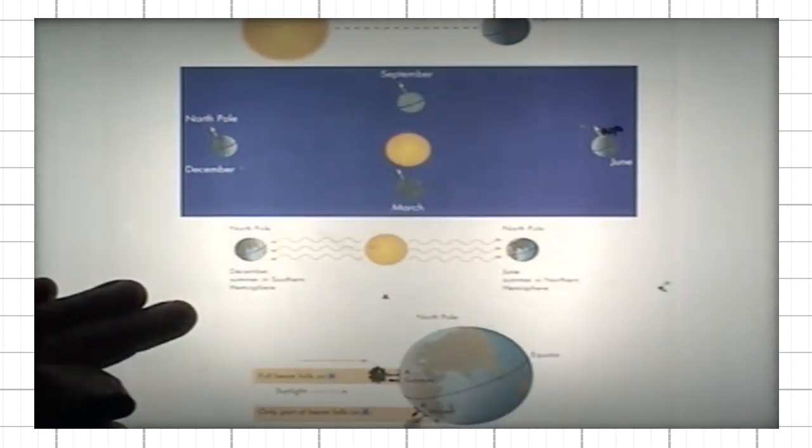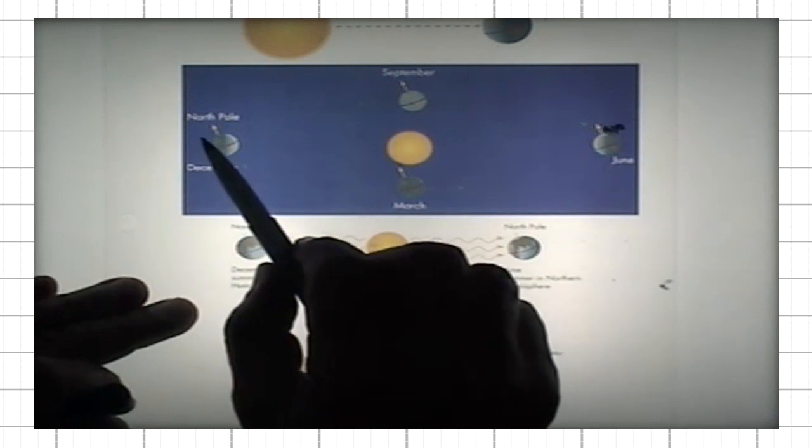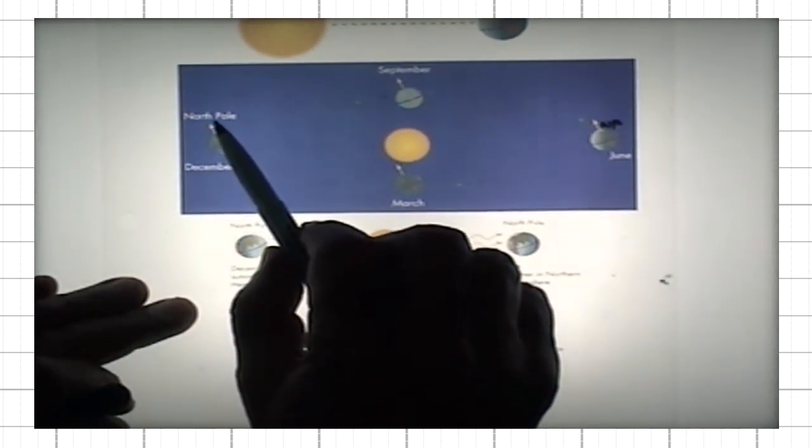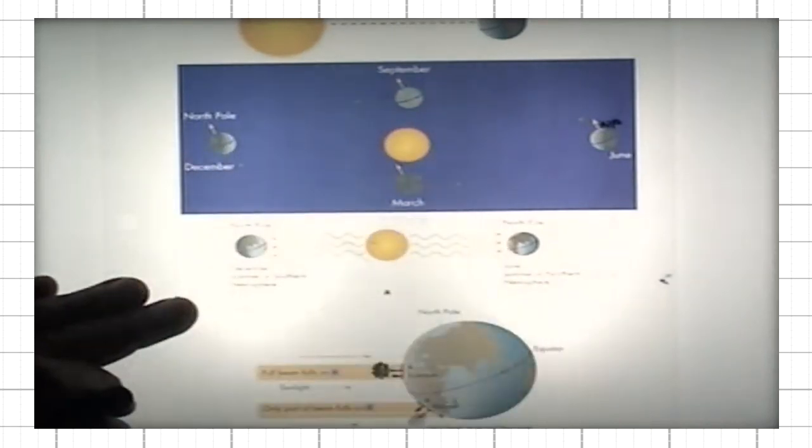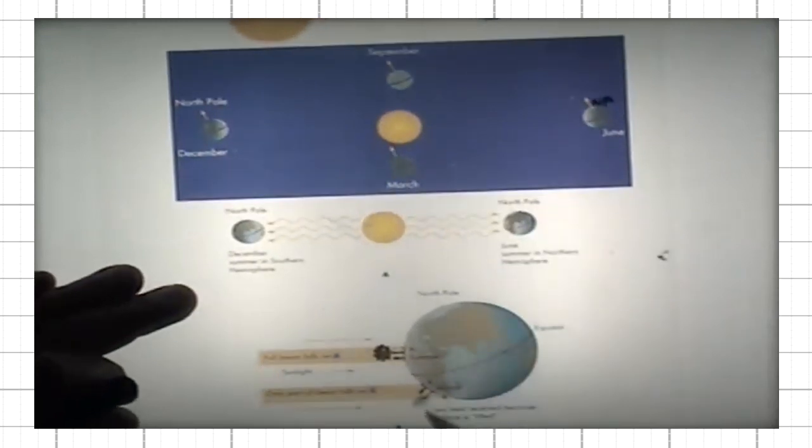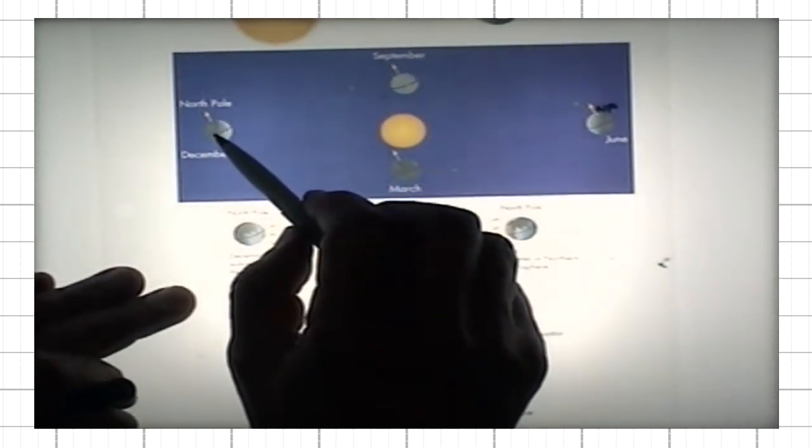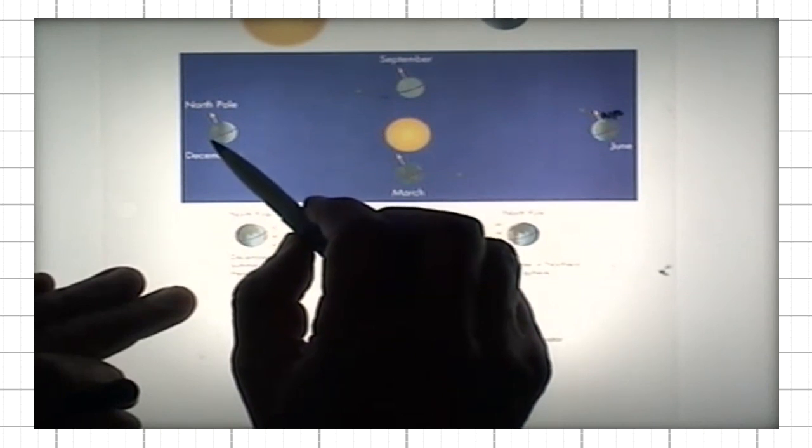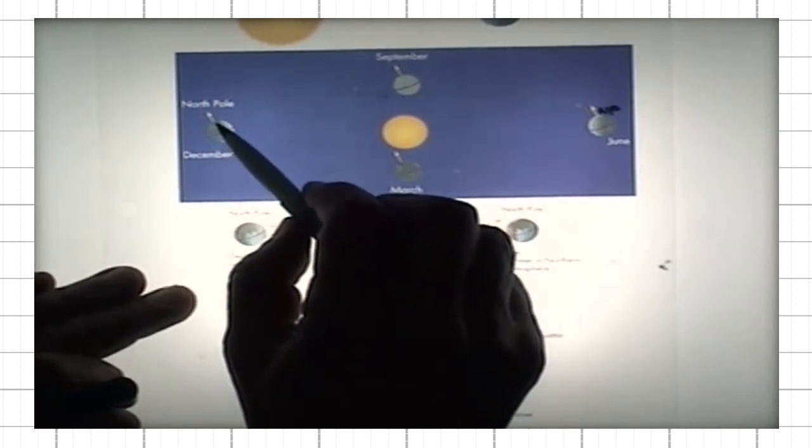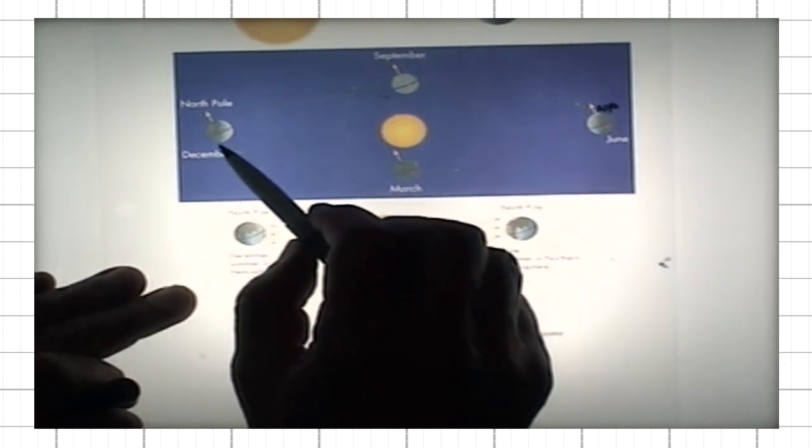In December, we have the opposite situation. Then the Northern Hemisphere is tipped most strongly away from the sun, in which case things are reversed. The Northern Hemisphere receives less direct solar heating than the Southern Hemisphere. We have winter in the Northern Hemisphere and summer in the Southern Hemisphere.